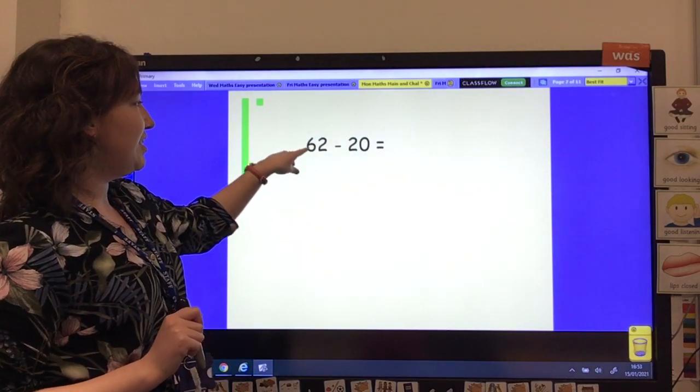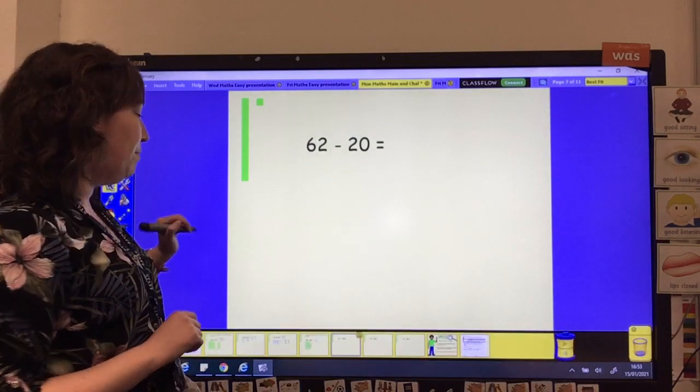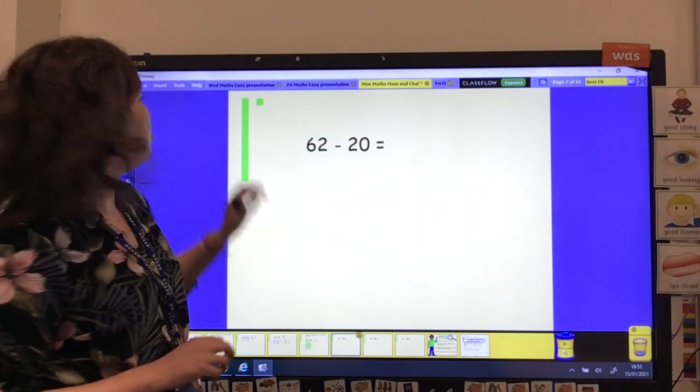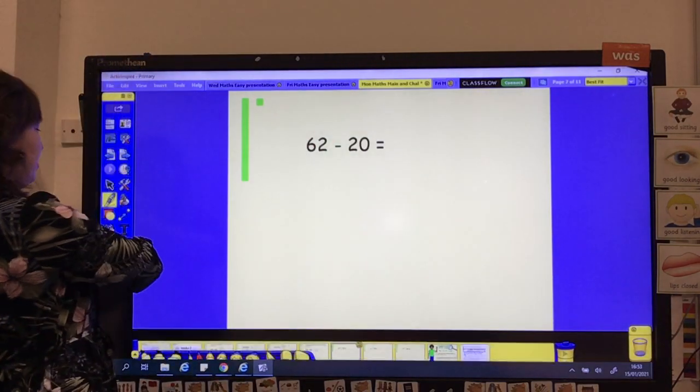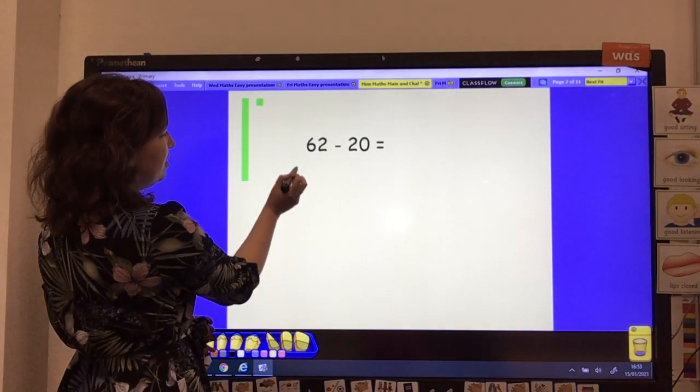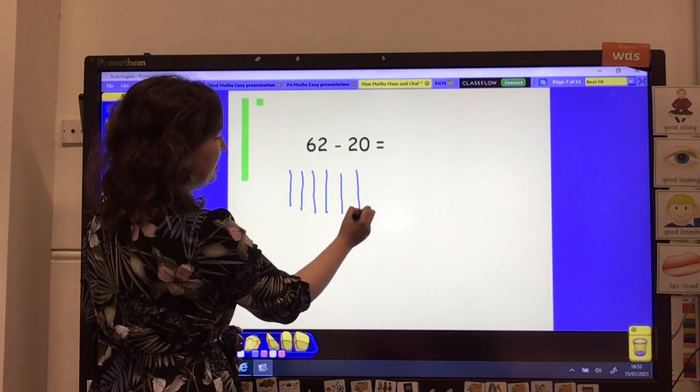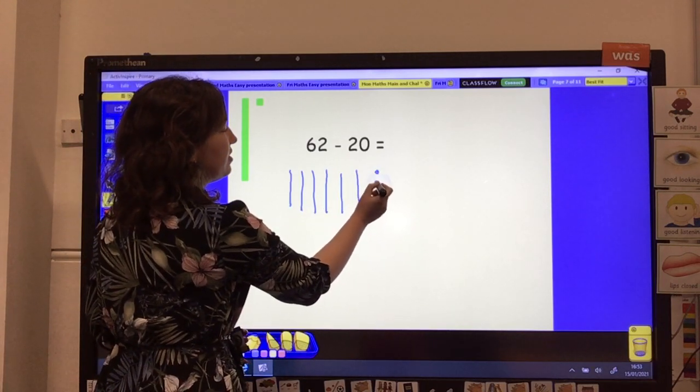This time, we've got 62 take away 20. So remember, make your 62 with your sticks and stones. You could make it or you could draw it. And then subtract 20. So I will do this one like I did last time. So 10, 20, 30, 40, 50, 60. 10, 20, 30, 40, 50, 60. 61, 62.